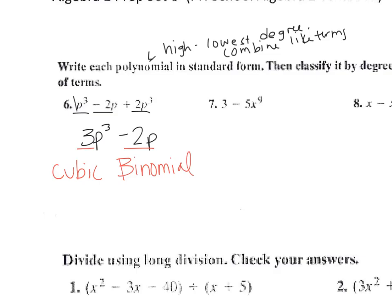And then the second one, there's no other x to the 9th power, so it's negative 5x to the 9th plus 3. We don't have a name for 9th degree, so I'm just calling it a 9th degree binomial.